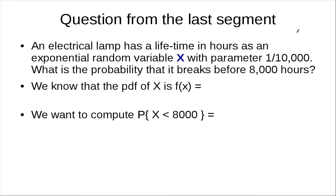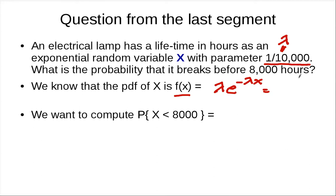This is the last segment for the exponential random variables. The previous question from the last segment is that we have a lamp with a lifetime in hours as an exponential random variable x with these parameters — so this is basically lambda. What's the probability that it breaks before 8,000 hours? The PDF in this case, f(x), is going to be equal to lambda times e to the minus lambda x, which is 0.1 over 10,000 times e to the minus x over 10,000.